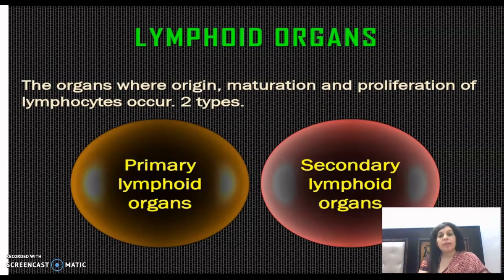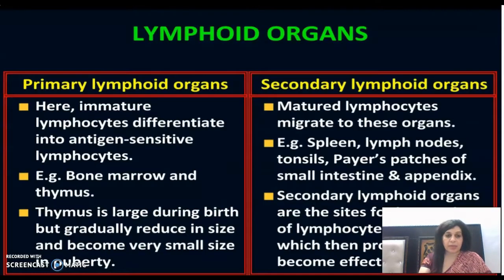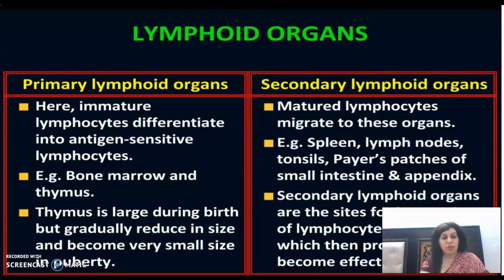अब हम बात करेंगे lymphoid organs के बारे में। Lymphoid organs वो organs हैं जहाँ origin, maturation, और proliferation of lymphocytes होती है। यह दो तरह के हैं: primary और secondary lymphoid organs। Primary lymphoid organs में immature lymphocytes differentiate into antigen-sensitive lymphocytes होते हैं।